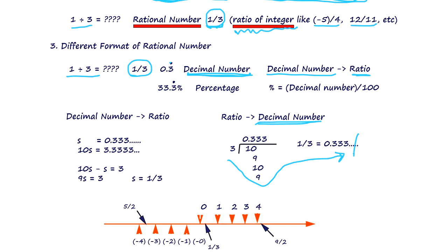Now, if we shift two digits, we get the percentage. So percentage and decimal numbers are all the same. It's actually a ratio of integers. So they are all rational numbers, just in different formats. Decimal numbers and percentages are different formats of rational numbers.